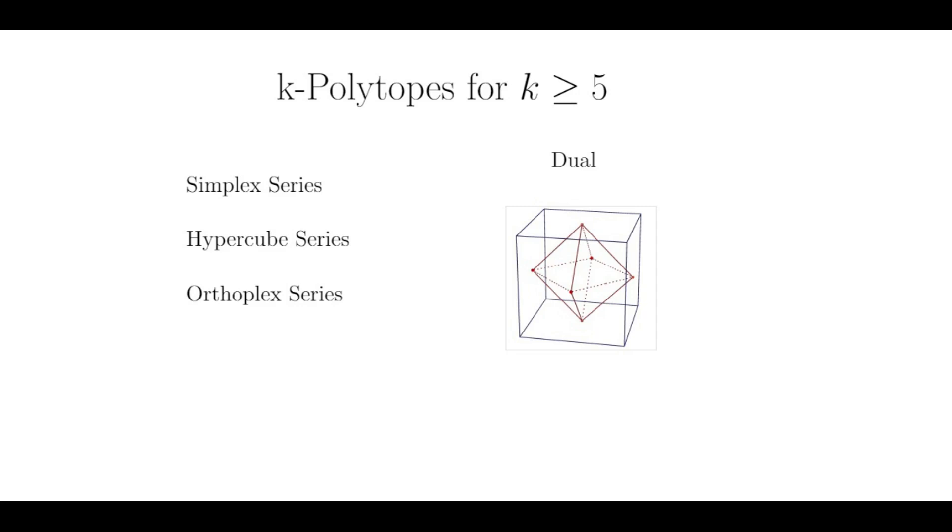However, if you create the dual of a tetrahedron by placing vertices at the center of its triangular faces, connecting the vertices gives you a smaller inverted tetrahedron, which is not a new shape. This is why there are only three regular polytopes in the higher dimensions, and not four, because the dual of the k-simplex is just another k-simplex. But the dual of the k-hypercube is the k-orthoplex.